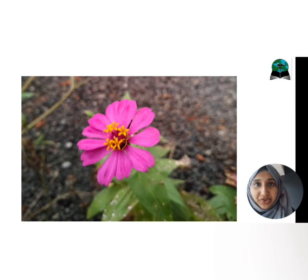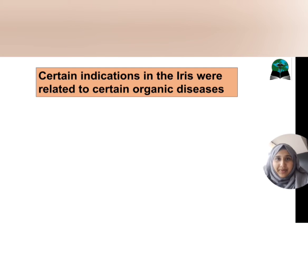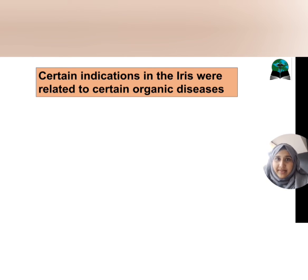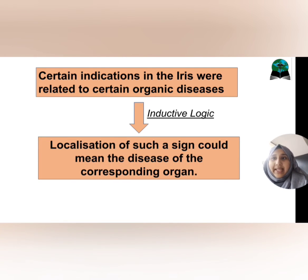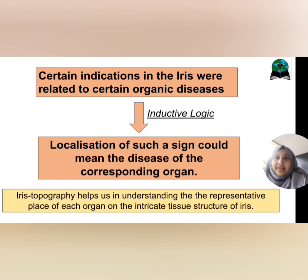What is iridology all about? Dr. Ignaz Juan Pigzili found out that there were certain indications in the iris which were directly related to certain organic diseases. So by inductive logic, localization of such a sign could mean the disease of the corresponding organ. He also devised iris topography to aid in understanding the intricate tissue structure of the iris and its connections with the corresponding organs.